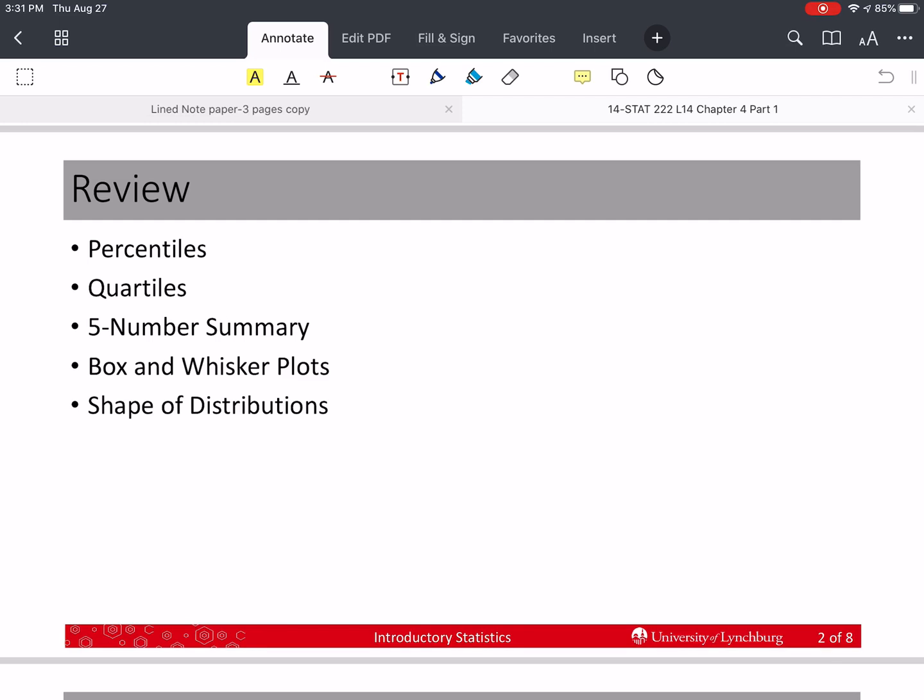Before we go on, let's review what we did in the last section in Chapter 3. We talked about percentiles. If you were in the 90th percentile, that means that 90% of the values are below your value. Quartiles, we had the 25th percentile, the 50th, the 75th percentile.